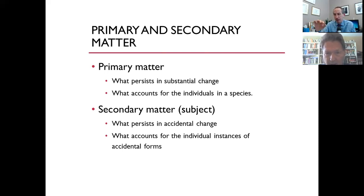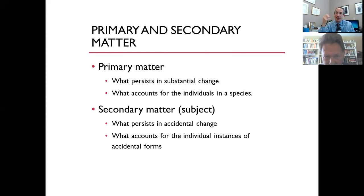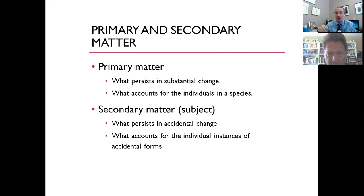I mentioned briefly, although it created a lot more controversy — especially in the middle ages — that primary matter is also what accounts for individuals in a species. Secondary matter is what persists in an accidental change. For example, if I get sunburned, my skin is the subject of the accidental change, and my skin turns from being pale to being red. So secondary matter refers to what persists in an accidental change, and it's also what accounts for the individual instances of accidental forms. My skin accounts for the individual instantiation of the color red, because red is now in my skin.